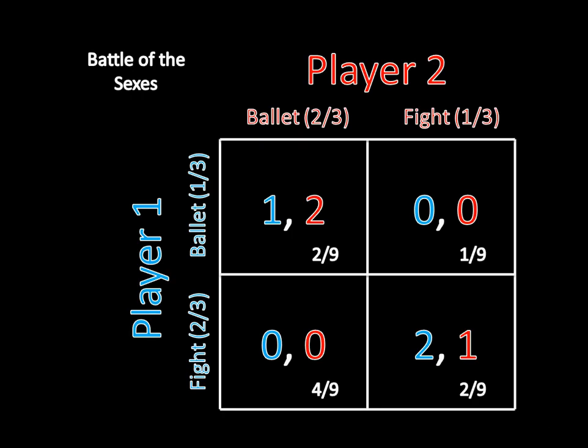I'll leave it to you to calculate the mixed strategy Nash Equilibrium payoff for player two, but suffice it to say it's actually going to be the same as player one's. Don't take this to mean that all mixed strategy Nash Equilibria will be equal for both players in all games — that's not going to be the case, but for this particular game it is. This process is fairly clear and easy as long as you're careful with the arithmetic and write all the pieces of information down so it's easy to double-check. Now that we know the payoffs for the mixed strategy for this game, in the next video we'll actually get to doing interesting things with it. Join me then.